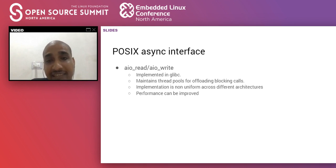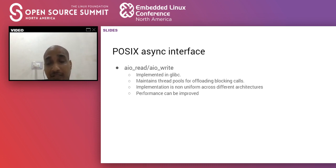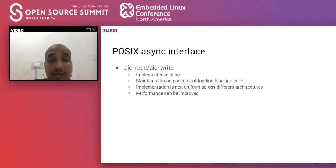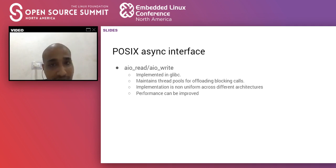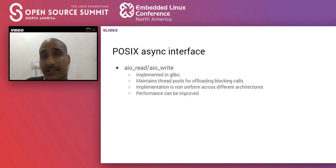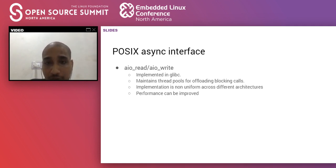The POSIX async interface is something worth discussing. This async interface is actually implemented in glibc, and how it implements the asynchronous nature of read and write calls is by maintaining thread pools for offloading blocking calls. If you want to do a read operation on a buffered file on disk or a block device, this library offloads the task to a background thread, making it a non-blocking interface. However, its implementation is non-uniform across different architectures and performance can be improved.